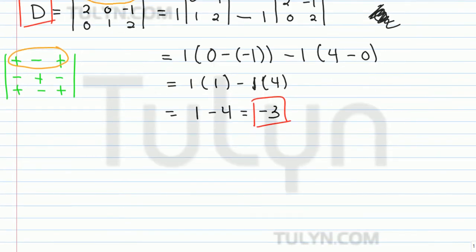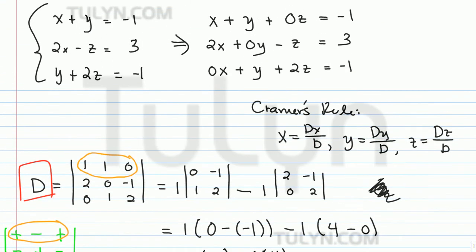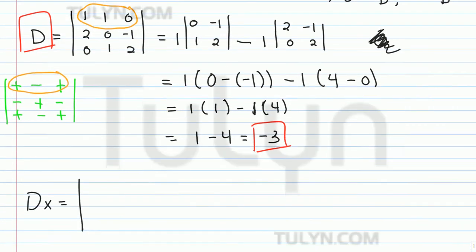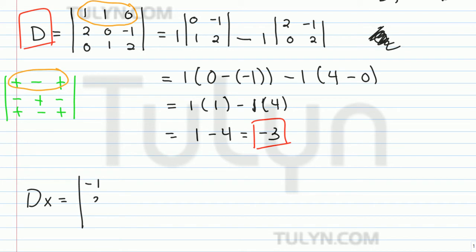Now that we've found D, our next step is to find Dx. Dx is found by replacing the coefficients of x with the constant terms — so negative 1, 3, negative 1 — and then writing the y coefficients as the second column and the z coefficients as the third column. Now we expand. It looks like the column that's going to give us the least trouble is the second column, because there are negative numbers everywhere else.